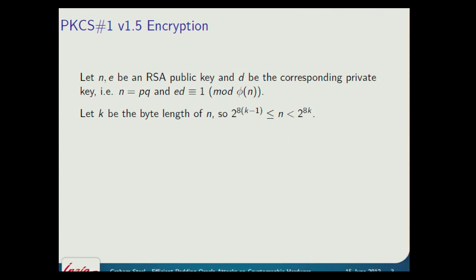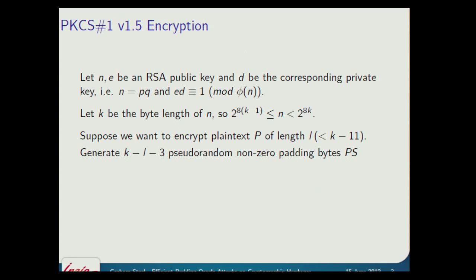So we've got a public key pair — a private key and a public key. Following Bleichenbacher's presentation, we're going to talk about the byte length of the modulus N, and we're going to call it K. We've got some plaintext we would like to encrypt, which has to be less than K minus 11. It's a plaintext P of length L. We generate K minus L minus 3 pseudo-random non-zero padding bytes in a string called PS. The block we encrypt starts with a zero, then a two, then all these non-zero padding bytes, then a zero that marks the beginning of the plaintext.